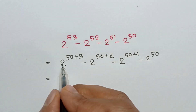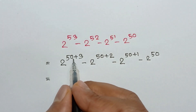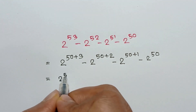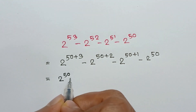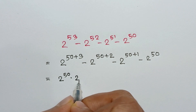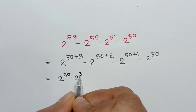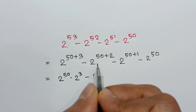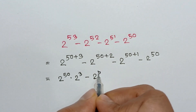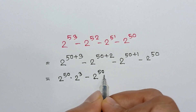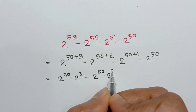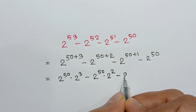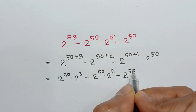We can write this as 2 to the power 50 times 2 to the power 3, minus 2 to the power 50 times 2 to the power 2, minus 2 to the power 50 times 2 to the power 1, minus 2 to the power 50.